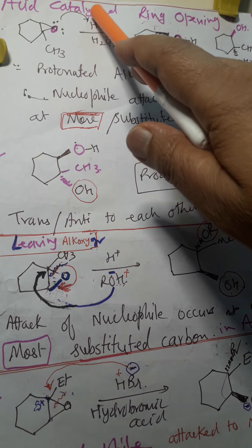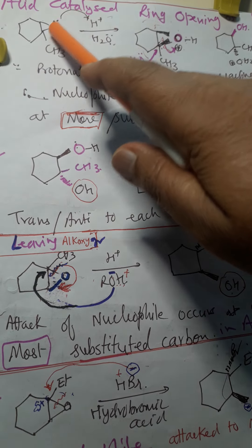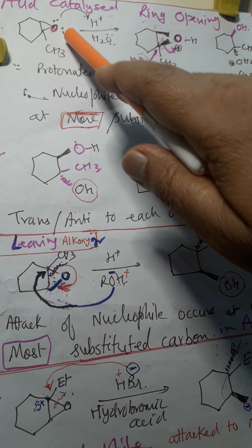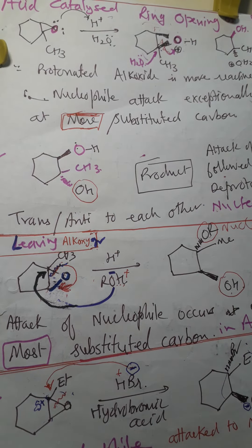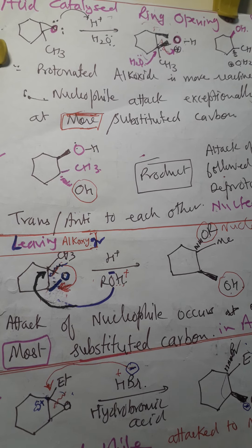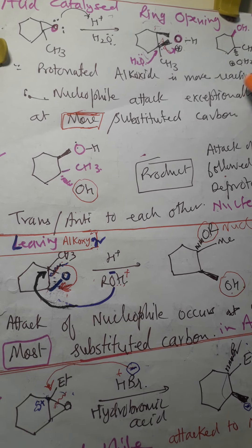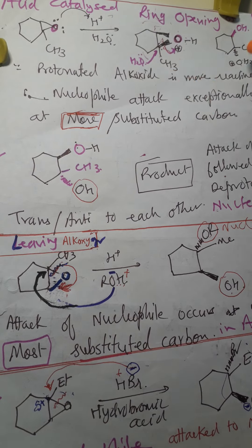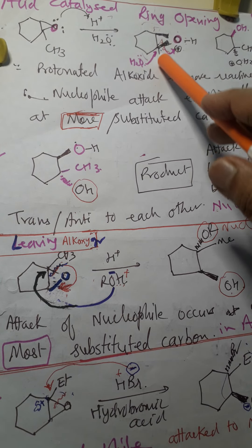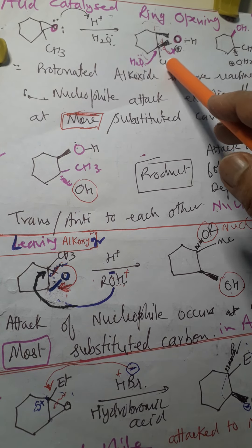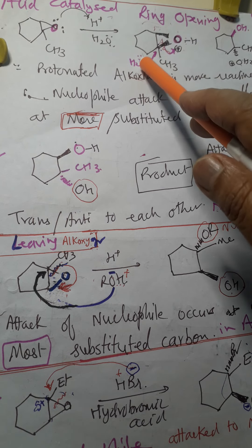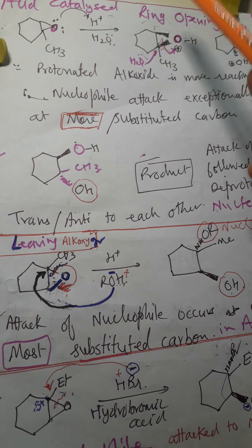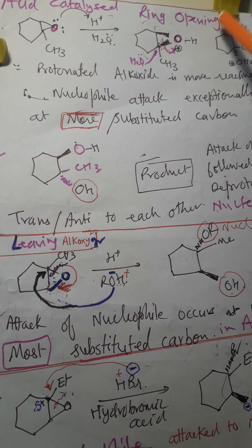When H⁺ attacks the epoxide, it becomes protonated. The protonated epoxide is very, very reactive. Ring opening will occur, and the electron pair will shift. The highly substituted carbon becomes the electrophilic site, and water as the nucleophile attacks onto it. This is acid-catalyzed ring opening of the epoxide.